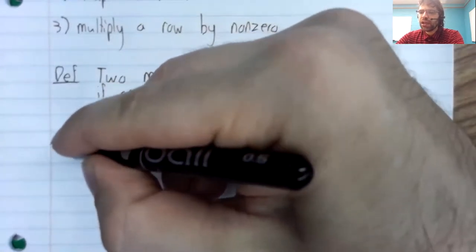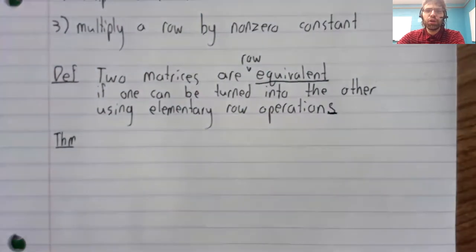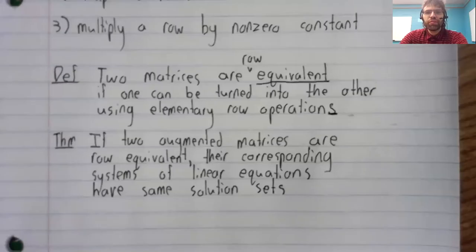And now a theorem. If two augmented matrices are row equivalent, their corresponding systems of linear equations have the same solution sets.